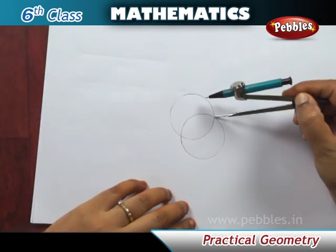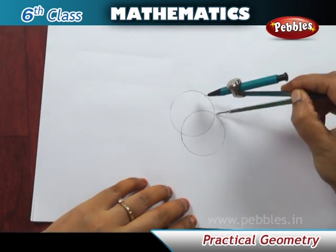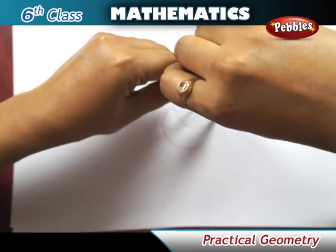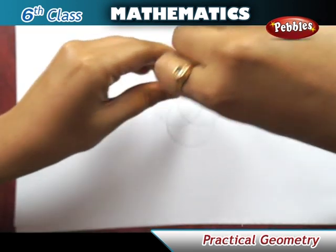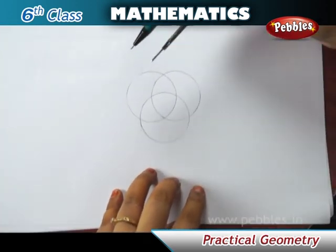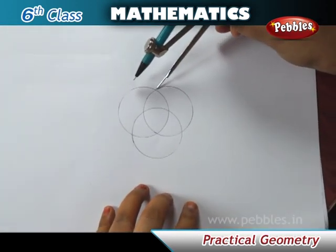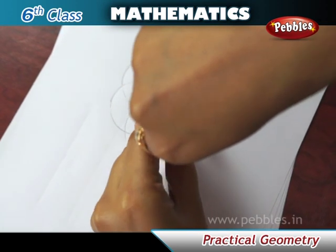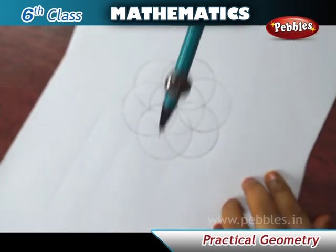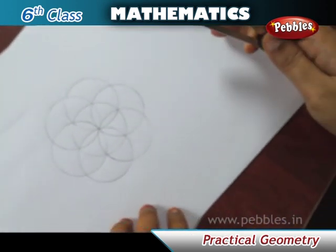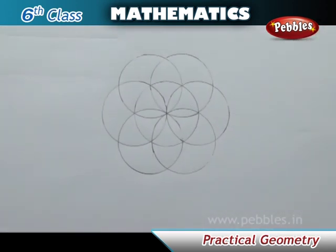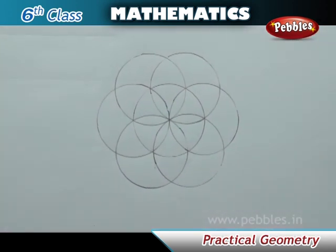Here is an activity with circles: Make a circle of desired radius in your notebook. Place the compasses on a point on the circle and, without changing the radius, draw another circle — it will cut the circumference at two points. On both those points, repeat the process again. You will get a beautiful pattern as shown. Color it as you wish.